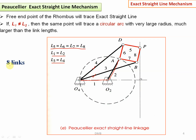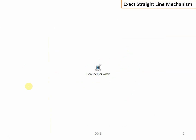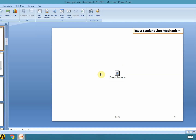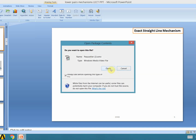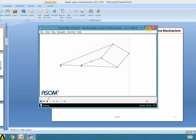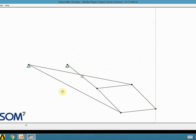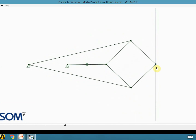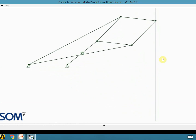For this mechanism, remember there are eight links and all turning pairs — higher pairs are absent, so this is a lower pair mechanism consisting entirely of lower pairs. Let us see the animated image of the Peaucellier mechanism. This is the Peaucellier mechanism in motion — here is point P which moves along the exact vertical straight line.